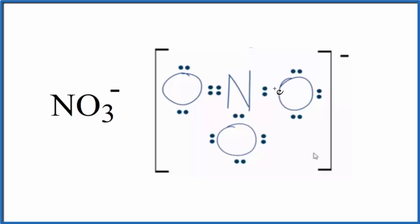Back to our Lewis structure - note that we would have resonance here. The double bond could be drawn here, here, or here, so we would have three equivalent resonance structures.